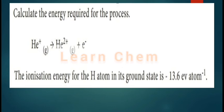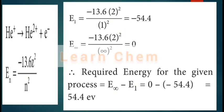We know the energy of an electron in the nth shell is E = −13.6Z²/n². For helium (Z = 2) in the first shell: E₁ = −13.6 × 2²/1² = −13.6 × 4 = −54.4 eV.